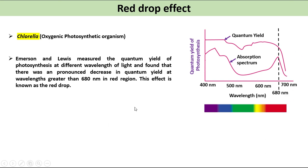As we can see in this graph, quantum yield severely decreases at wavelengths greater than 680 nanometers in red region. We can also see decrease in quantum yield in green region, as chlorophyll reflects green light. But quantum yield does not decrease severely in this region because carotenoids absorb light of green region and transfer to photochemical reaction center.